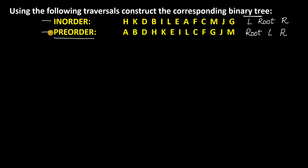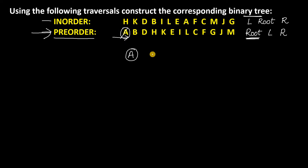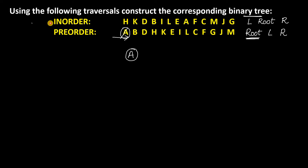First, look at the preorder. In preorder, the first element we get is the root. If you observe here, the first one is A. So A is the root of the binary tree. Draw A at the top.